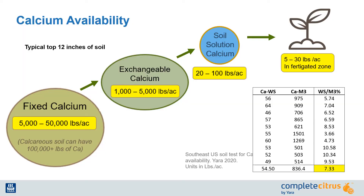Citrus trees require available calcium, and I wanted to go over what I mean by available. There are many soil amendments that include calcium such as lime and gypsum, and while these are common cultural practices, it isn't a solution for increasing available calcium levels in the soil.